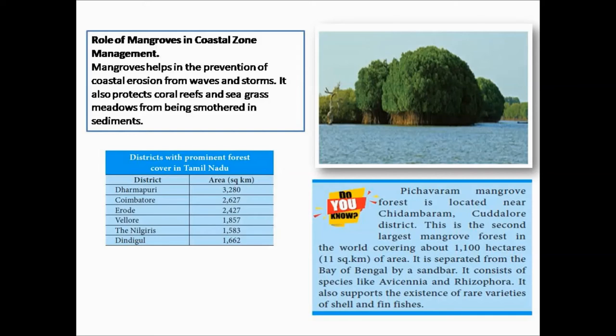Pichavaram mangrove forest is located near Chidambaram in the Cuddalore district. It is the second largest mangrove forest in the world, covering an area of about 11 square kilometers. It is separated from the Bay of Bengal by a sandbar, and consists of species like Avicennia and Rhizophora. It also supports the existence of rare varieties of shellfish and fin fish.